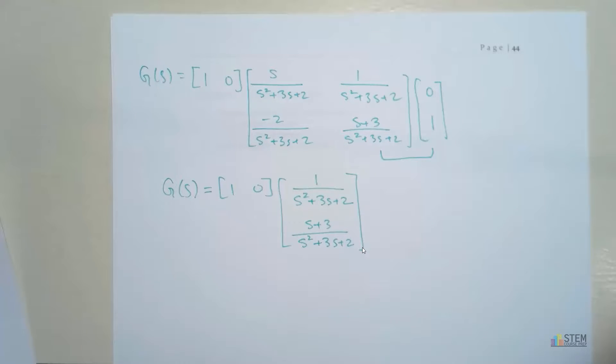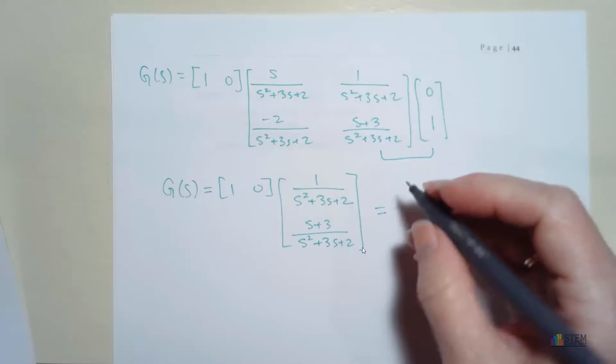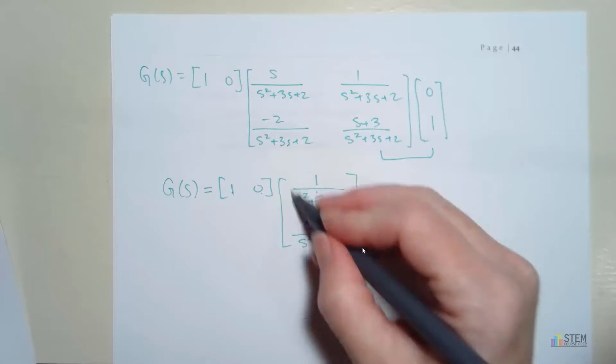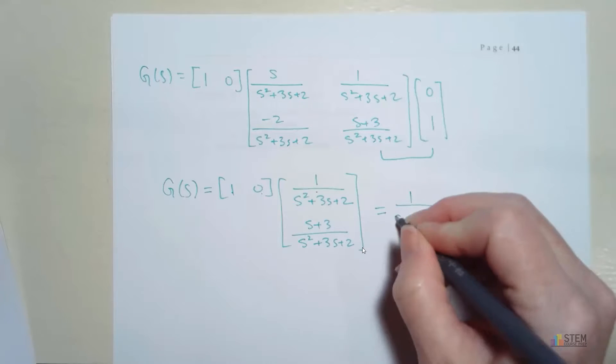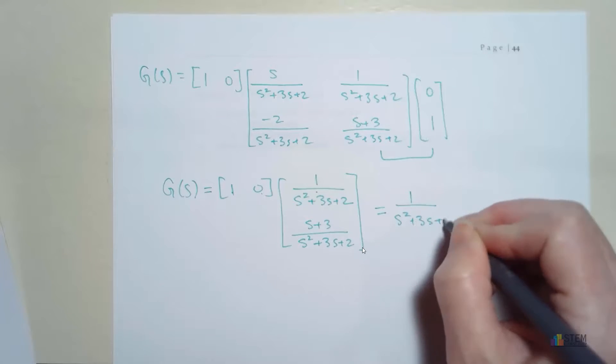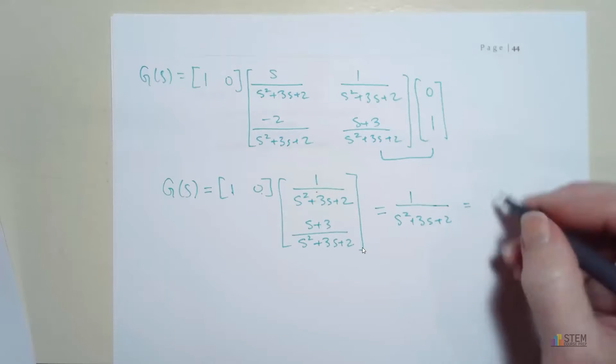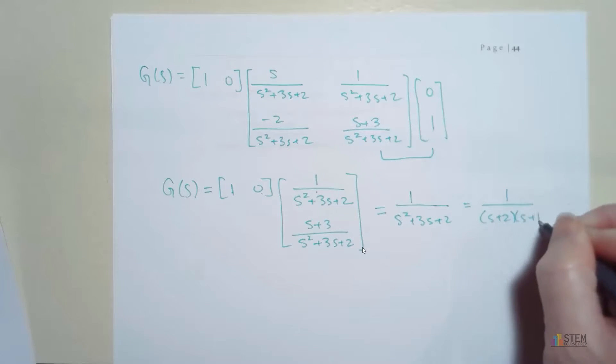So now we have that. All that's left to do is multiply this by this. When you do that, you're just going to have 1 times this plus 0 times that. So that leaves you with this top one. So you get 1 over (s squared plus 3s plus 2). And then usually we want to factor this apart. So we're going to have 1 over (s plus 2) times (s plus 1).